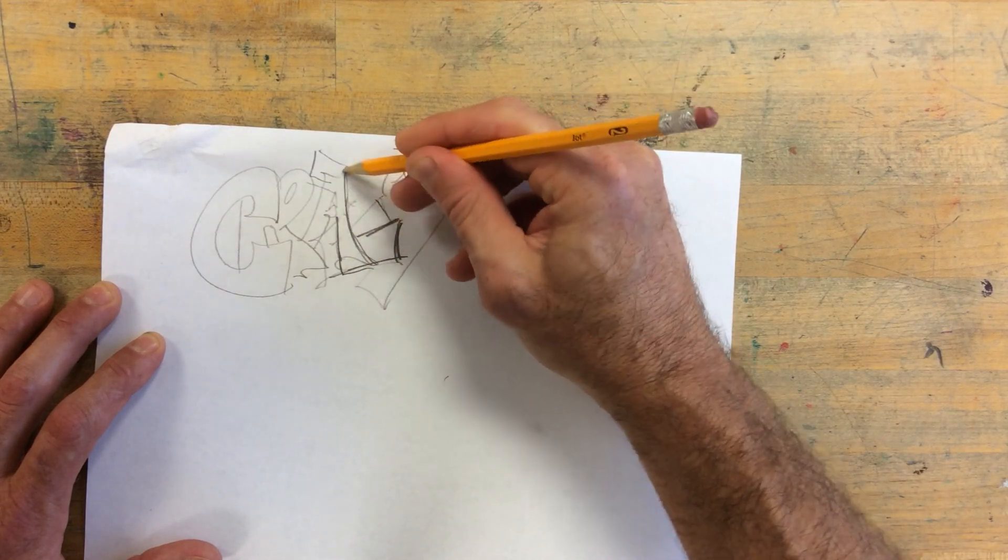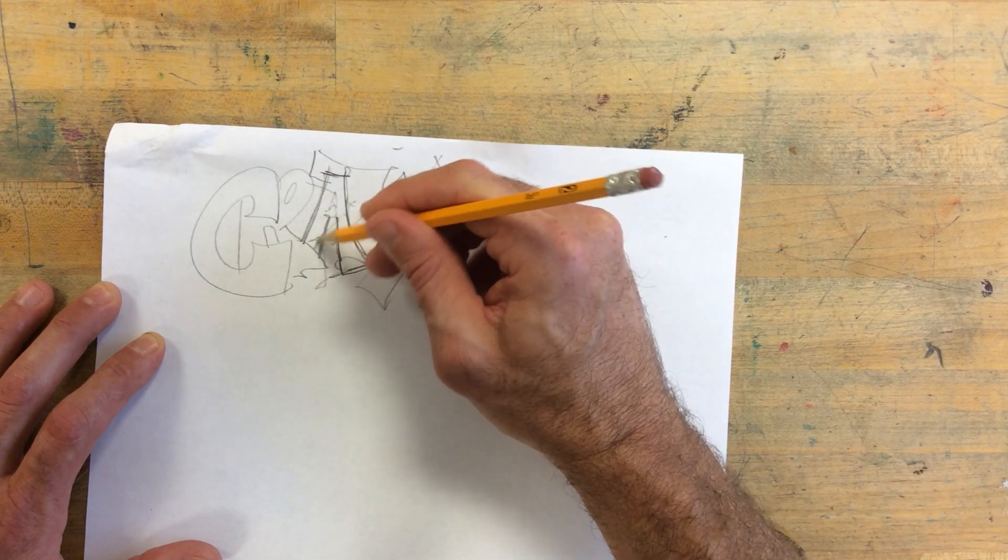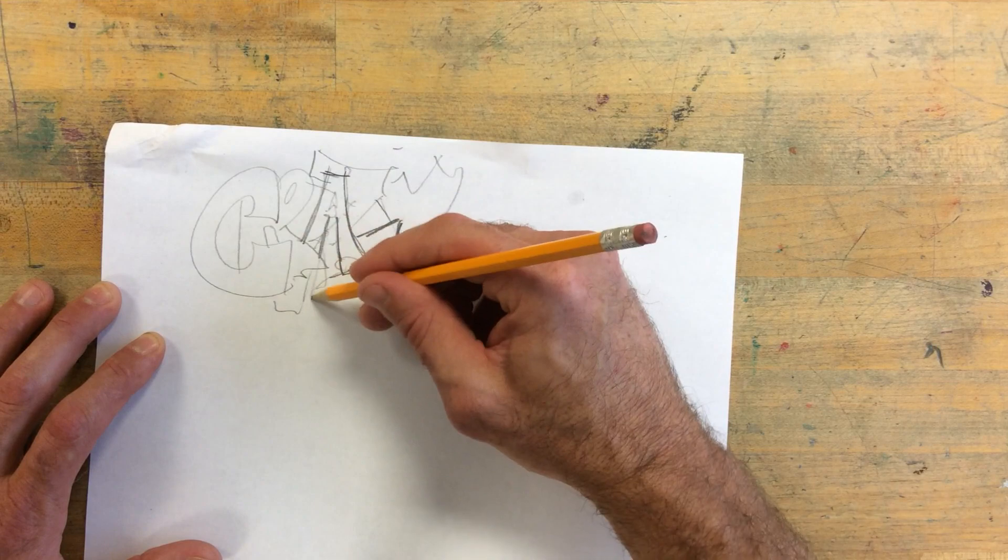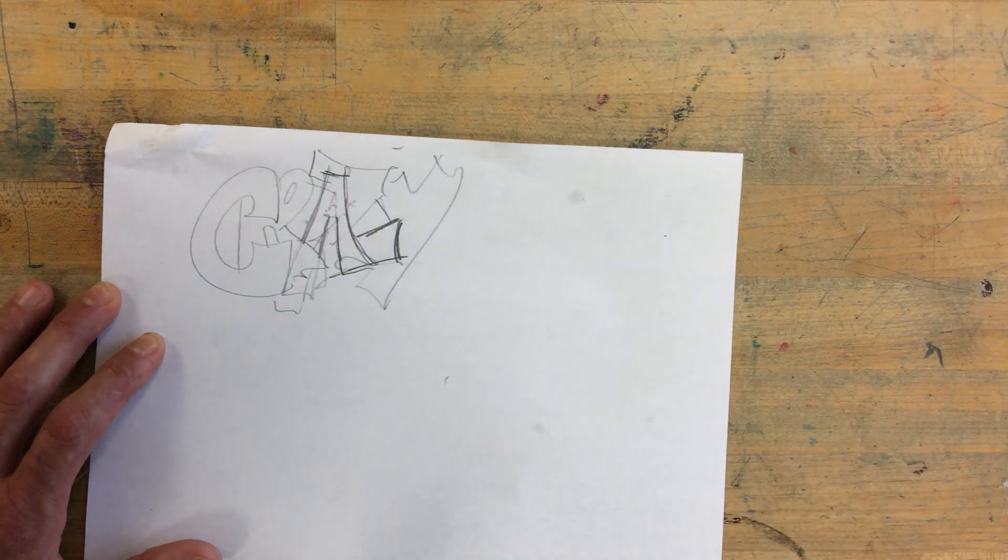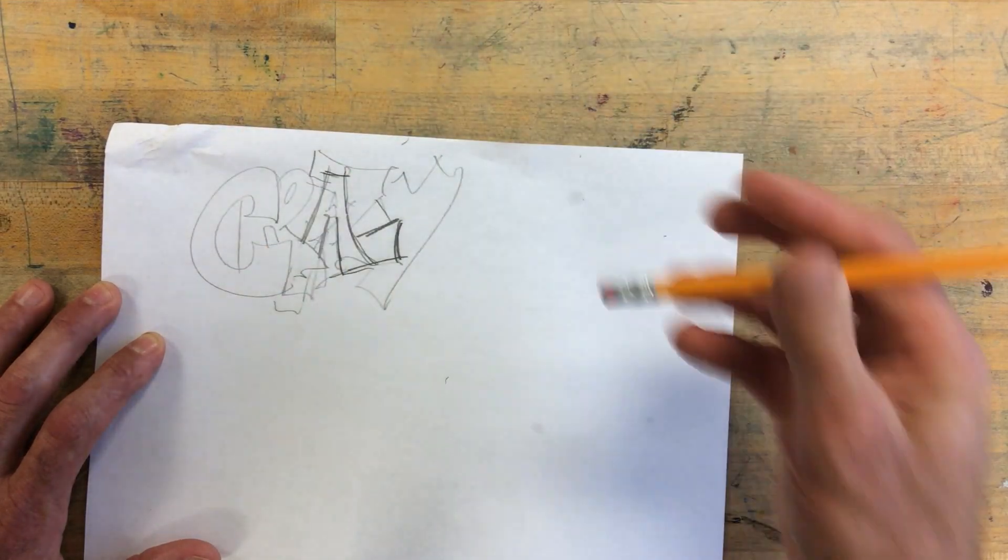Because it can get confusing to try to draw it freehand without drawing the full letter because they don't always connect, right? If you try to put an A down here, it may not just line up quite right. But if you go like this, it's really easy to line up that A and then you just erase the stuff that you don't need.